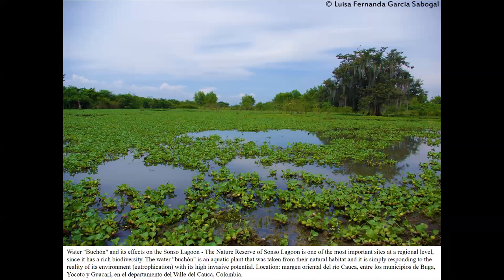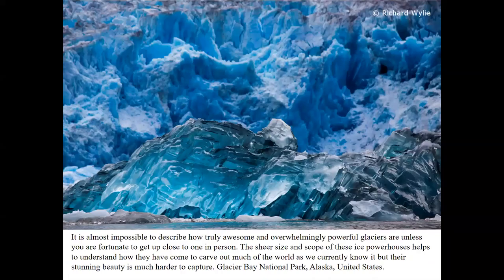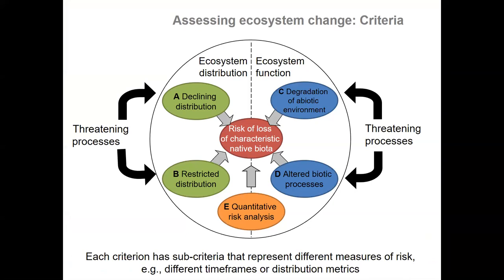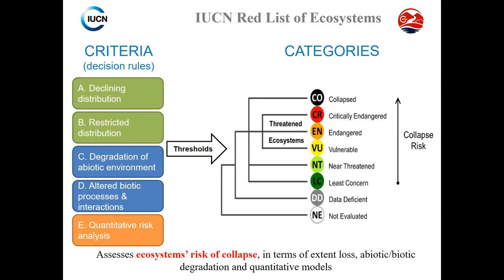Similarly, abiotic conditions may change and no longer provide living conditions for an ecosystem, or even very small ecosystems may be subjected to very specific threats due to their restricted range. These main pathways of collapse have been integrated into a model that identifies the five main pathways of collapse and uses them as criteria to establish a logical assessment for the Red List of Ecosystems. These five criteria are used to assign a category to the ecosystem: least concerned, near-threatened, vulnerable, endangered, critically endangered — a growing level of collapse risk according to those categories.